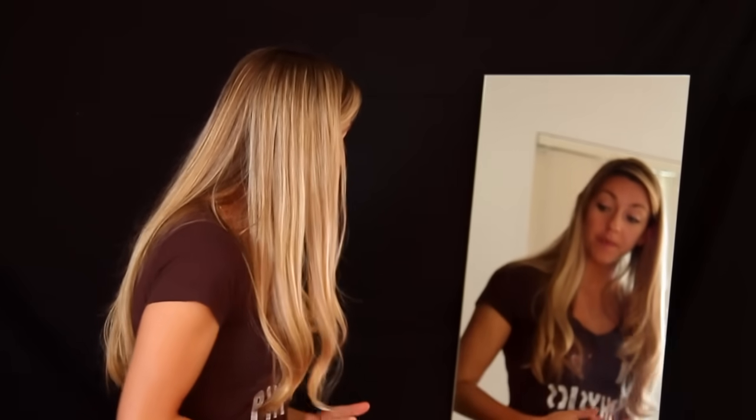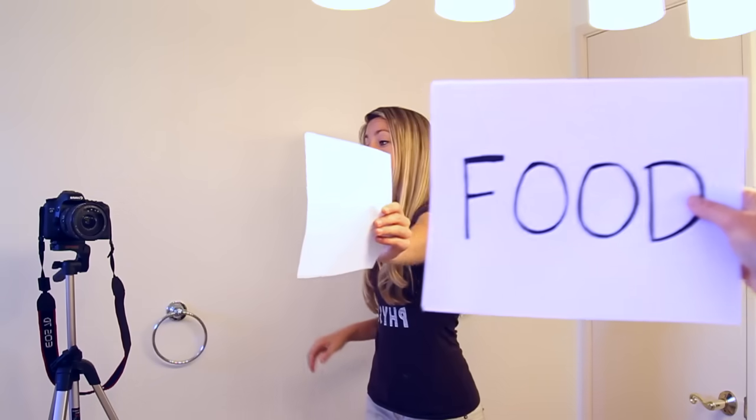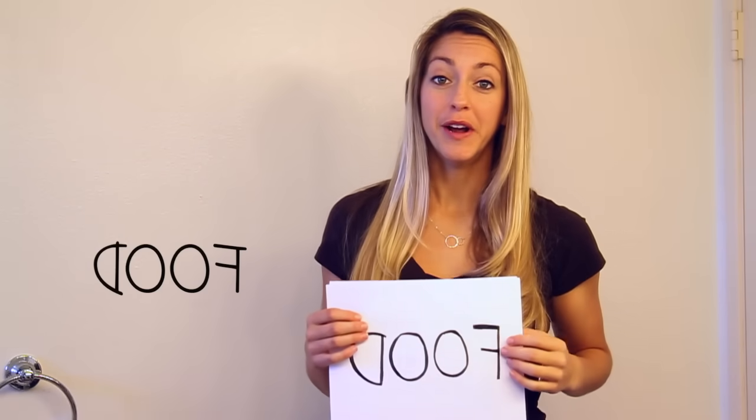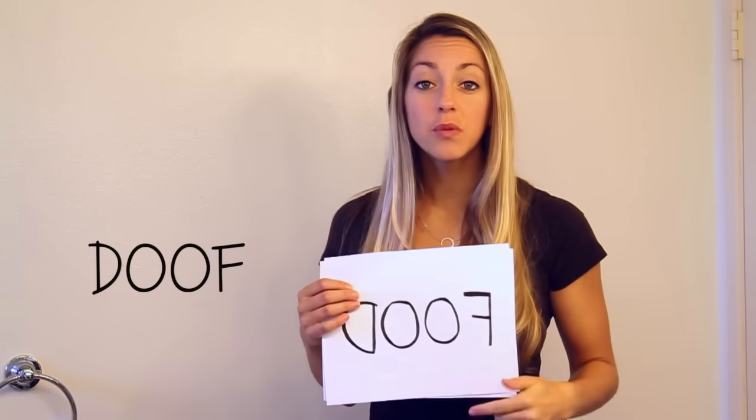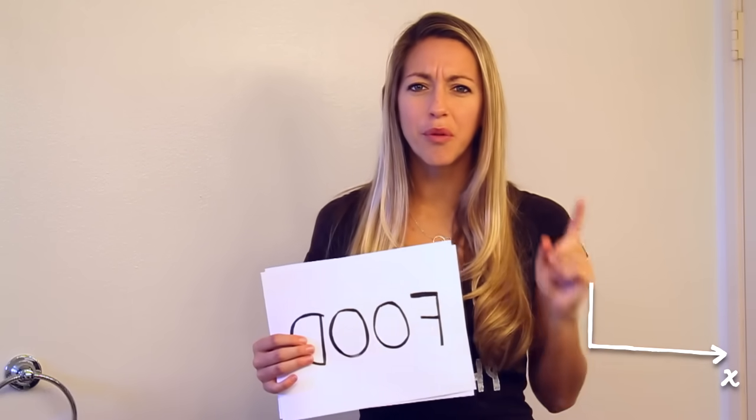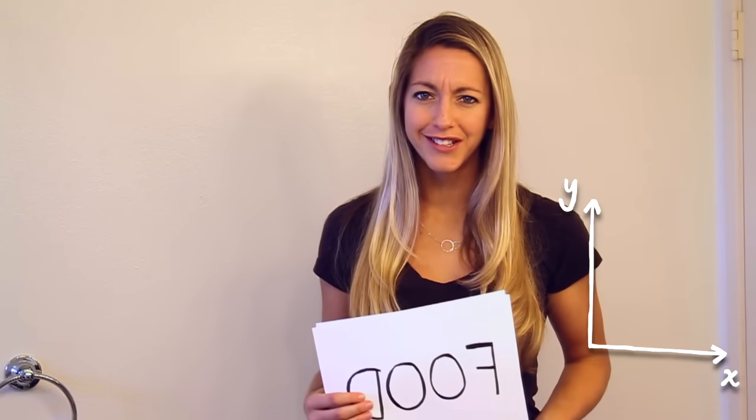Have you ever wondered why mirrors appear to flip things horizontally, but not vertically? For example, this piece of paper that says 'food' now says 'doof' in the mirror, with backwards letters of course, but they're still right side up. How would the mirror know the x direction from the y direction?